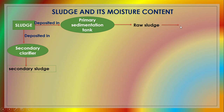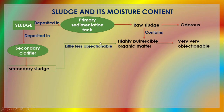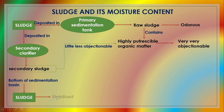Raw sludge is odorless and it contains highly putrescible organic matter and is thus very objectionable. Secondary sludge is also putrescible, though a little less objectionable. The sludge withdrawn from the bottom of the sedimentation basins must therefore be stabilized before its final disposal.